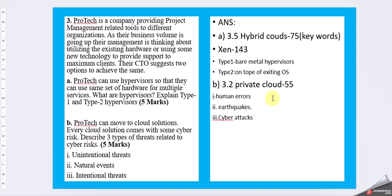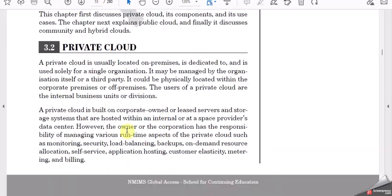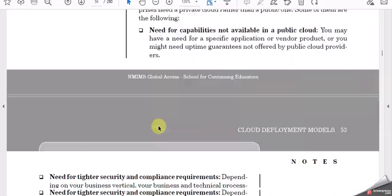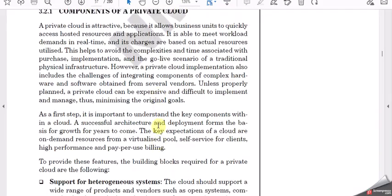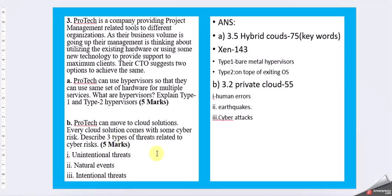For part B, we go to private cloud — page 55. Here you have information about components of a private cloud. What they are looking for here is the challenges — basically the cyber risk. Unintentional threats are like human error, suddenly deleting something or unknowingly making mistakes. Natural events are like earthquakes, heavy rain, or some kind of natural disaster. Then we have intentional threats, which are cyber attacks — people purposefully blocking systems, some malware. You can take any example and put it here.